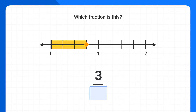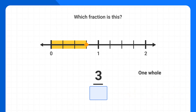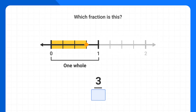Next, the denominator of my fraction is the total number of parts in one whole. One whole is the important thing to remember. This is my one whole, from zero to one.